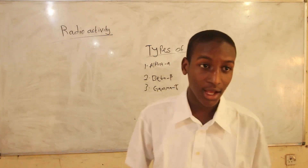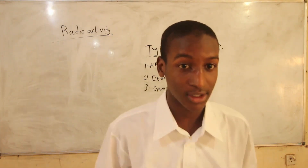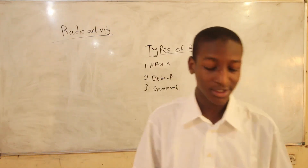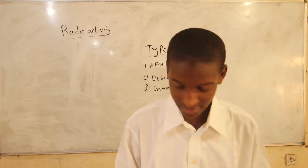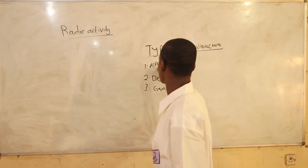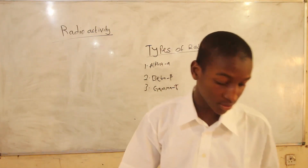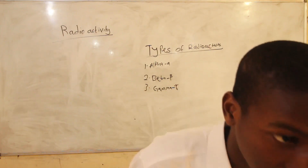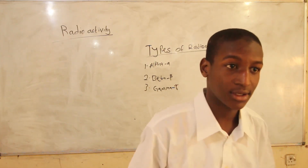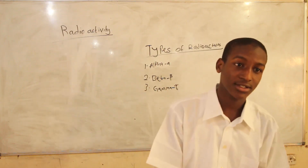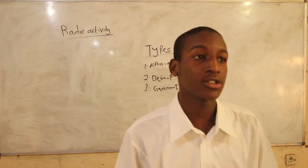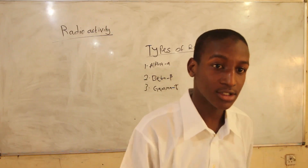Alpha particles are positively charged. They have a speed of 1 over 20 the speed of light. The element contained in alpha particles is helium.